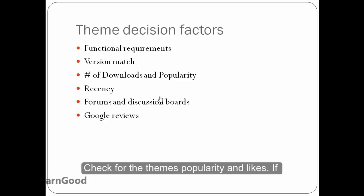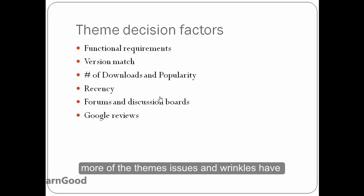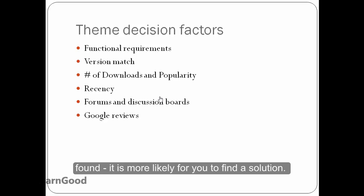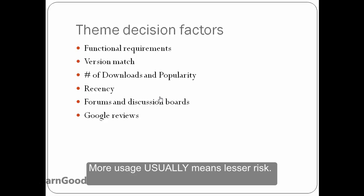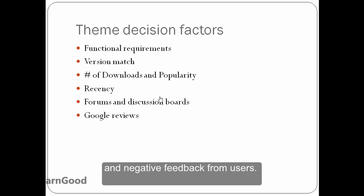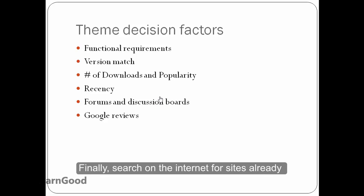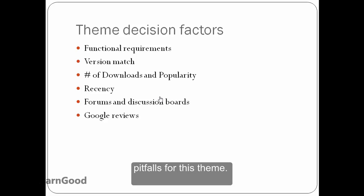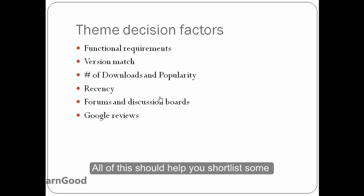Check for the theme's popularity and likes. If more people are downloading it and registering their usage happily, then it means more of the theme's issues and wrinkles have been already resolved, and if any more are found, it is more likely for you to find a solution. More usage usually means lesser risk. Then check Moodle's discussion boards for the theme you are researching and see positive and negative feedback from users. Finally, search on the internet for sites already using this theme and for general tips and pitfalls. All of this should help you shortlist some themes and make a final decision on which theme to implement.